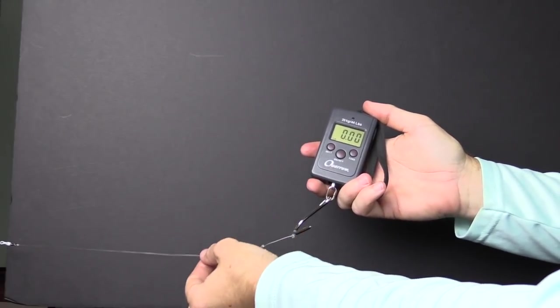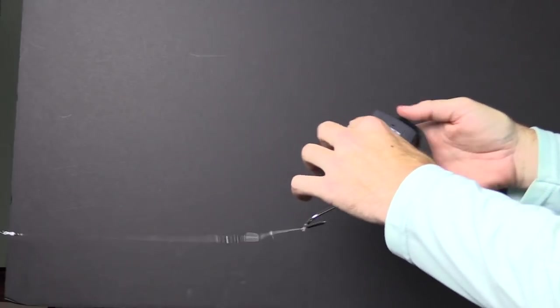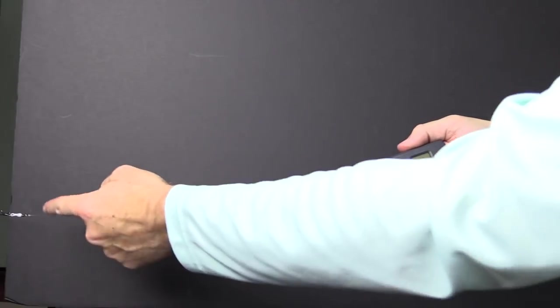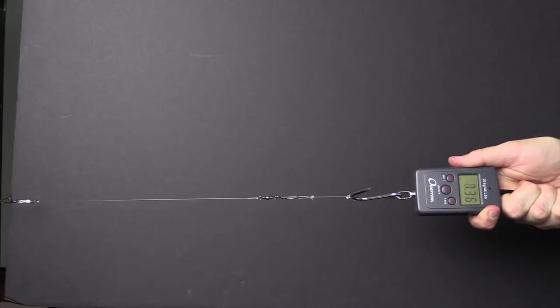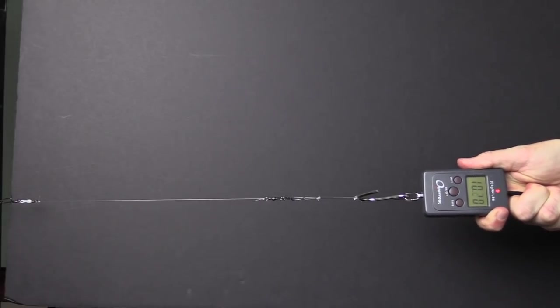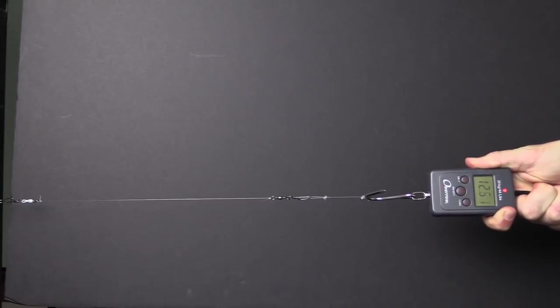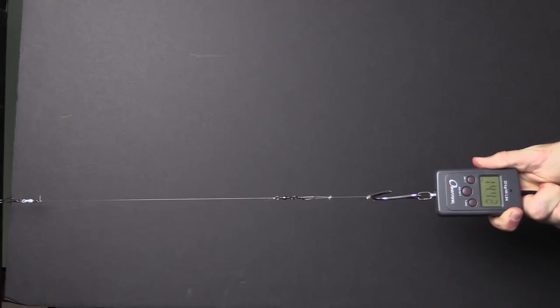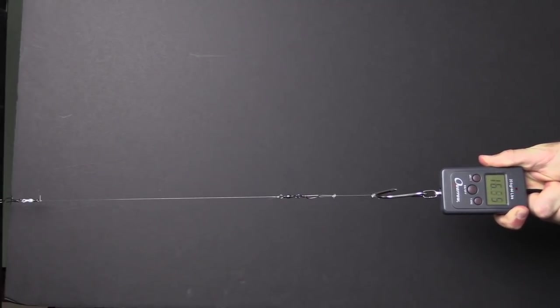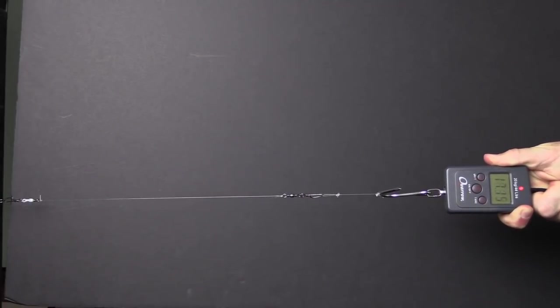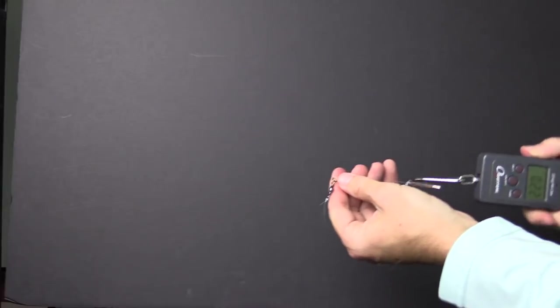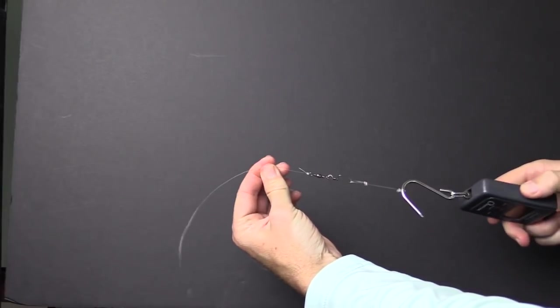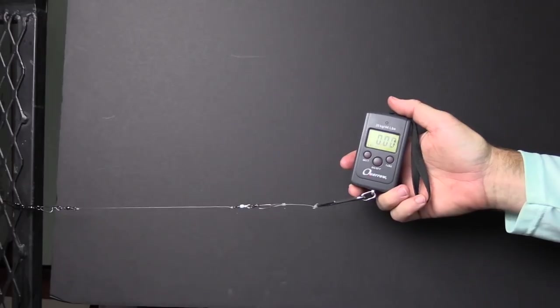Now we're going to do that same test with the traditional monofilament. Again, this is 20 pound test - clinch knot, uni knot, scale zeroed out. Let's start putting under pressure. We have 8, 9, 10, 11, 12, 13, 14, 15, 16, 17, 18, 19, 20 - wow, that was a little over 20 pounds and looks like the clinch knot won again.